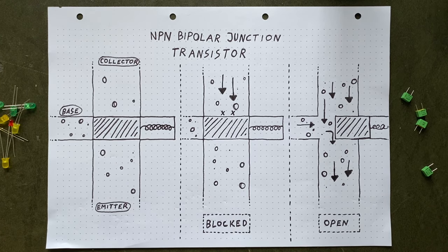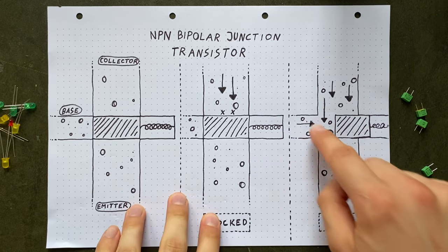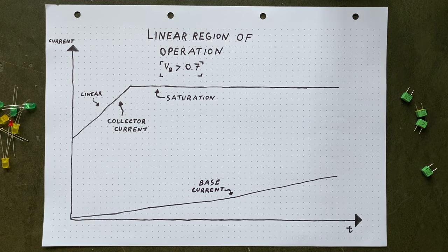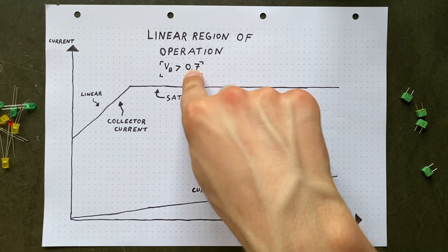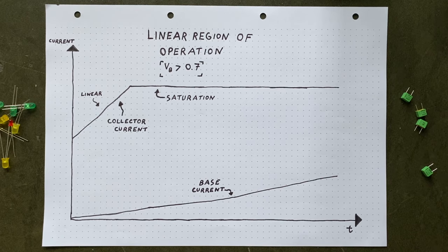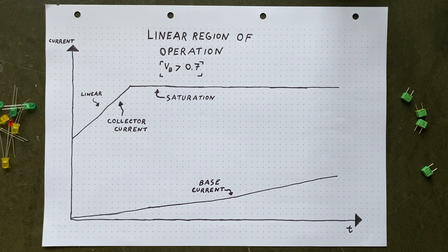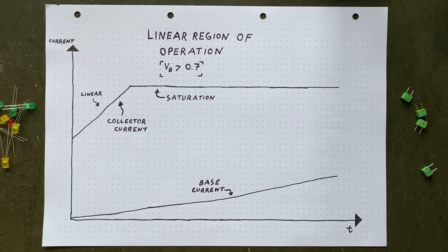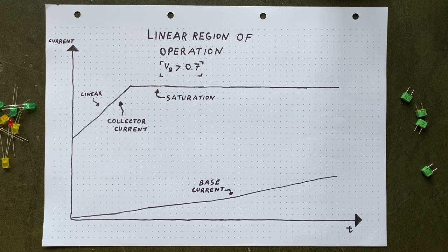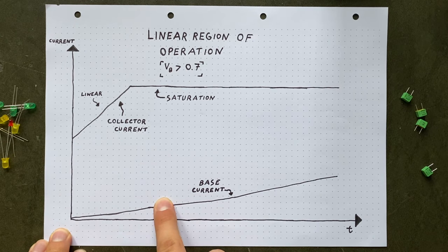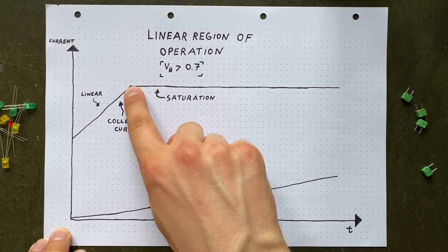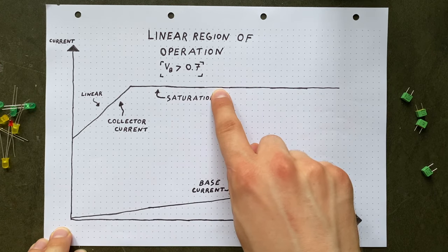Instead, there's different operation regions depending on the amount of pressure applied to the base. So typically, you would use a transistor in what's called the linear region of operation, which it enters if there's at least 0.7 volts applied to the base. Then the transistor will work like a current amplifier, meaning that the amount of water flowing into the base and out of the emitter will linearly determine how much water can flow from collector to emitter. Since the amplification factor of a transistor typically ranges from around 100 to 900, any small increase in water flow into the base will make the transistor open up by a lot, until it's completely open and reaches the saturation region.